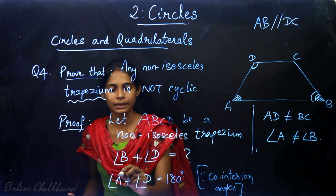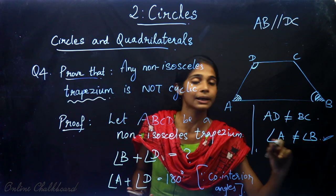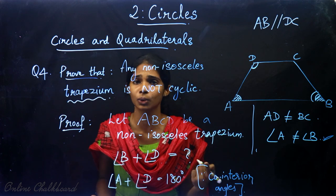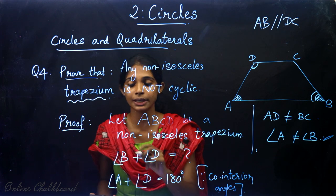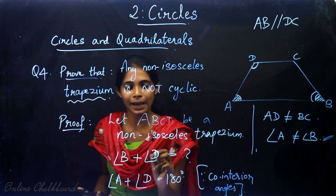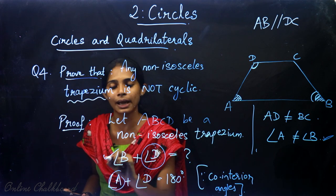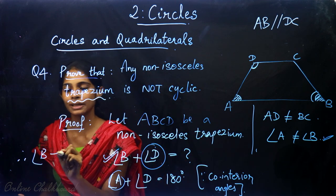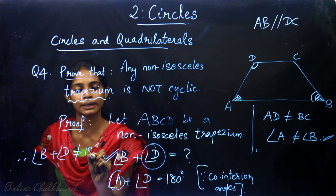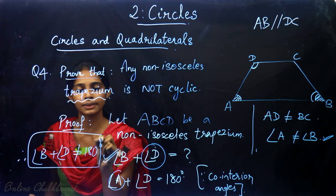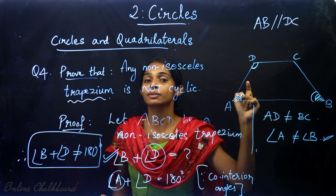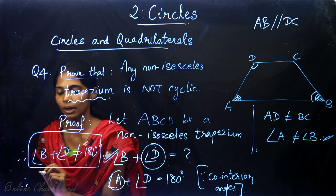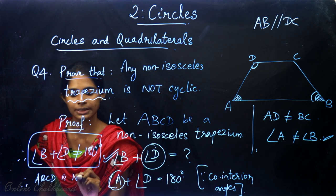We already established that angle A plus angle D equals 180. If angle B plus angle D were also 180, that would imply angle A equals angle B, which contradicts our assumption that ABCD is non-isosceles. Therefore, angle B plus angle D will not be equal to 180 degrees.